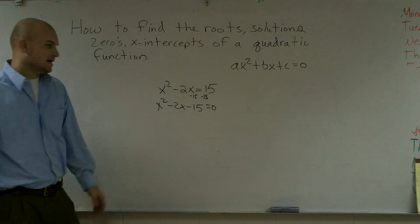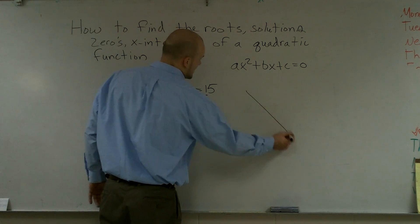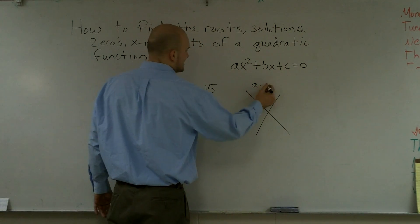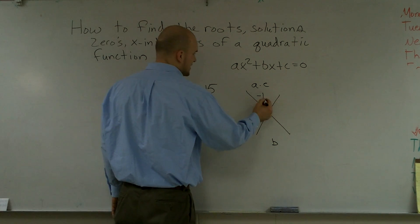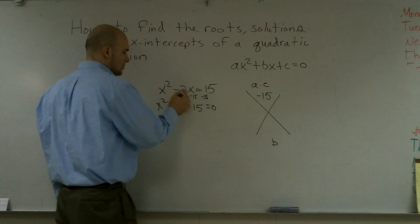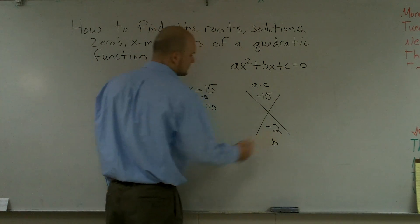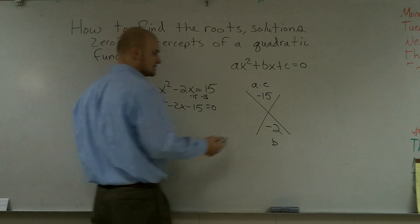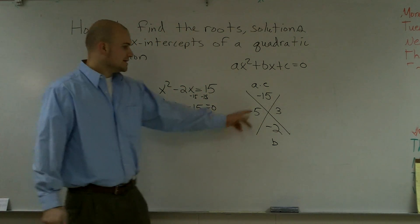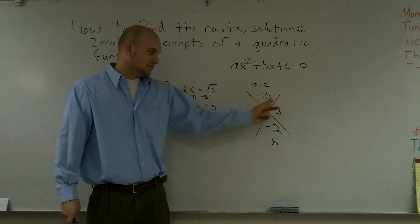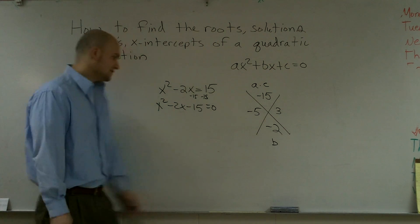Now we need to go ahead and do our little diamond method, which is a times c and b. So a times c is 1 times negative 15, which is negative 15. Our b, which is negative 2. And what we notice with this is, this one's definitely going to be negative 5 and 3 are two factors. Negative 5 times 3 gives you a negative 15. Negative 5 plus 3 gives you a negative 2.